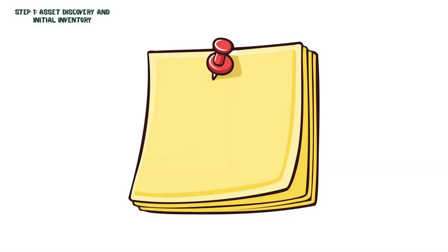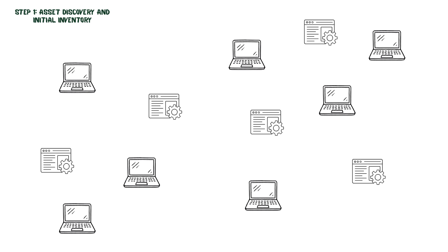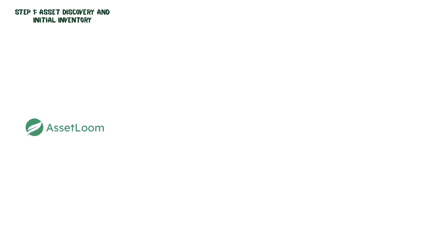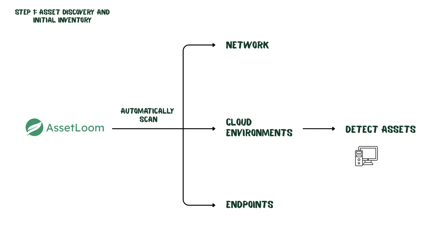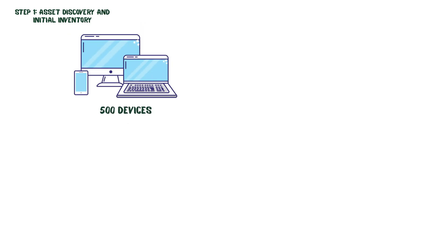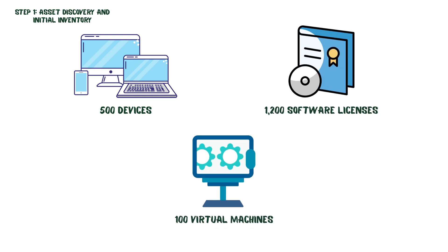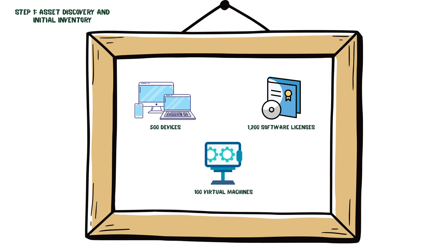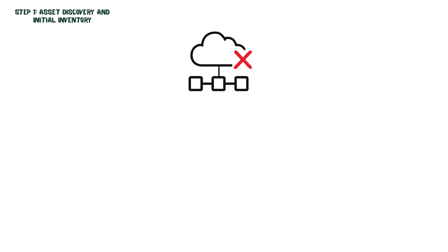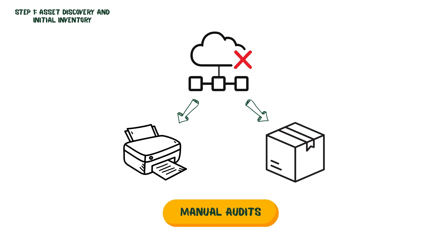Step 1: Asset discovery and initial inventory. First, you need to discover all your assets. Let's say your company has thousands of devices and software applications scattered across multiple departments. Automated ITAM tools, like Asset Loom, can scan your network, cloud environments, and endpoints to automatically detect assets like desktops, mobile phones, servers, and software applications. For example, a network scan might show 500 active devices, 1,200 software licenses actively in use, and 100 virtual machines running in the cloud — giving you a real-time picture of your IT inventory without manually checking each device. For assets not connected to the network, like old printers or unused devices in storage, you perform manual audits to track those down.